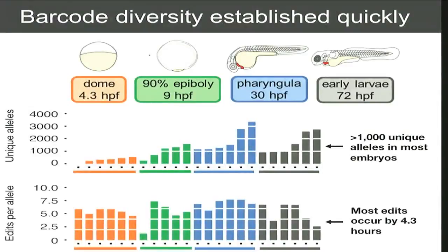Every group here corresponds to a developmental time point and every bar is a different embryo. Even though we see more alleles later in time because we're sampling more cells, most of the editing happens relatively early. We're not encoding the editing reagents genomically, so you can imagine they just stop working after a certain number of cell divisions rather than continuing to edit.